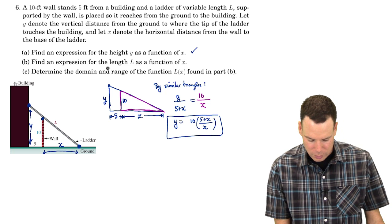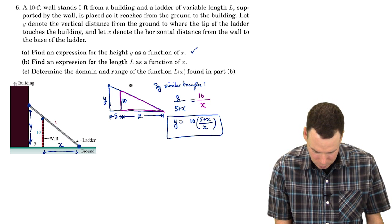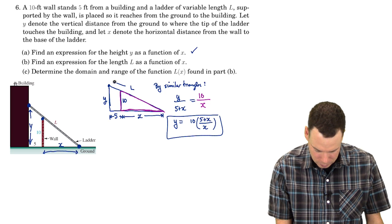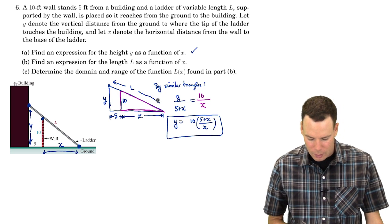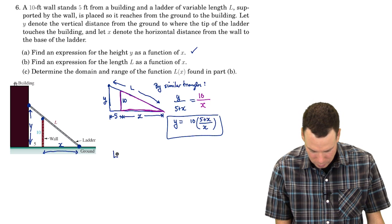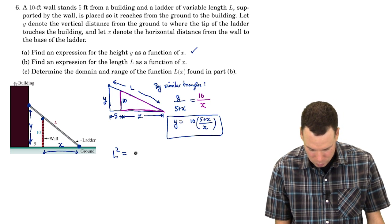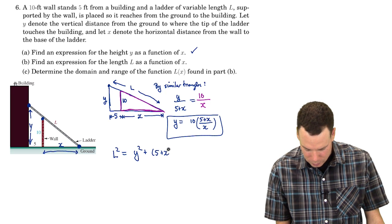Now I want to look for an expression for the length L as a function of X. So what is L? I'll draw it in my diagram up here. L is this full distance, full length of the hypotenuse here. So for that, there's a big right triangle, then I know that L² is equal to Y² + (5 + X)².